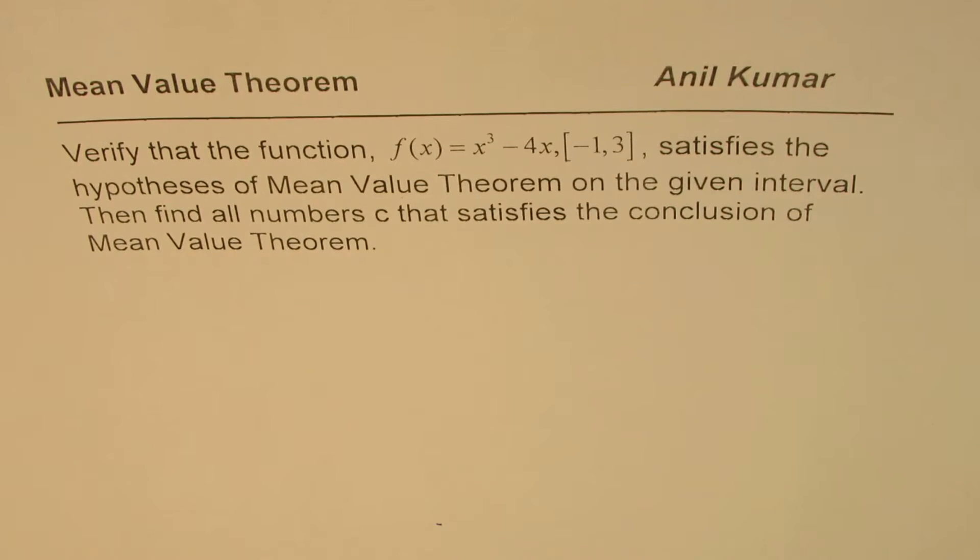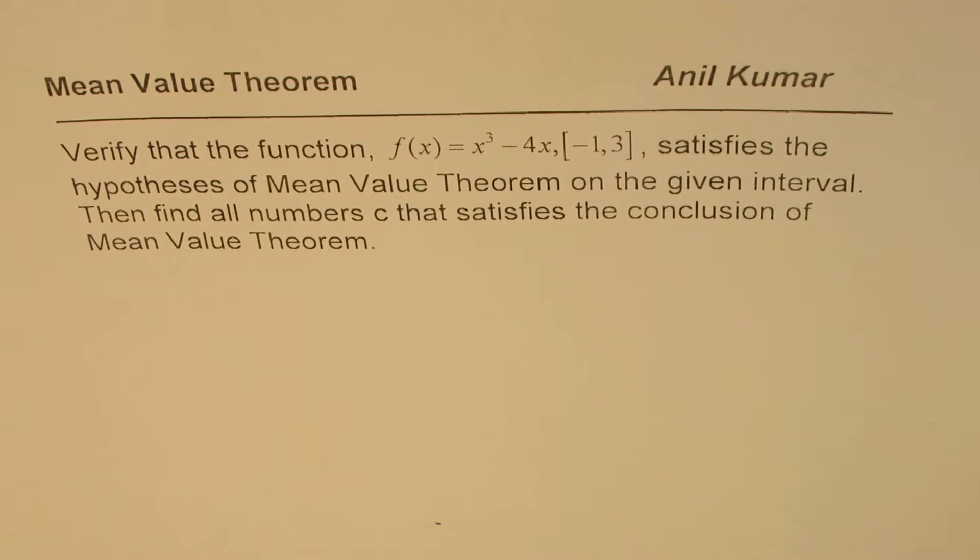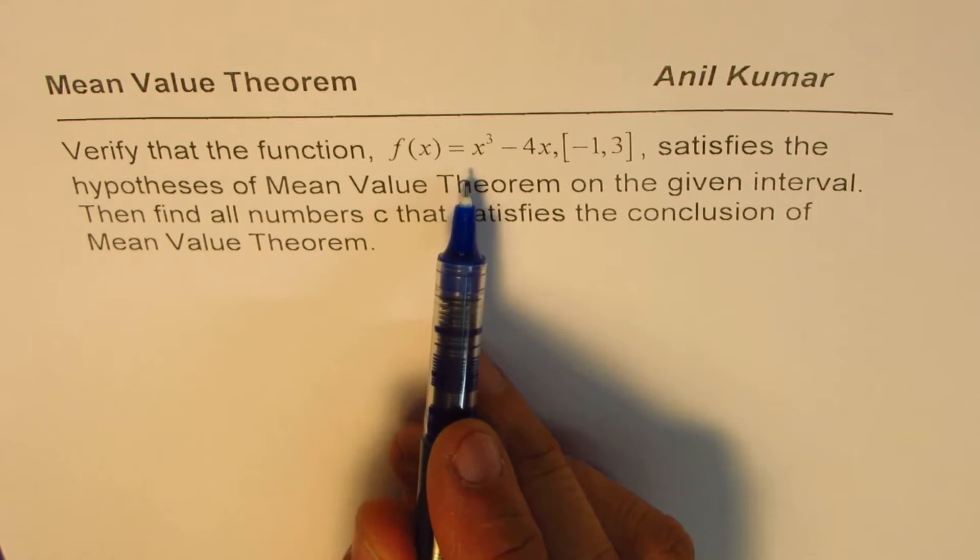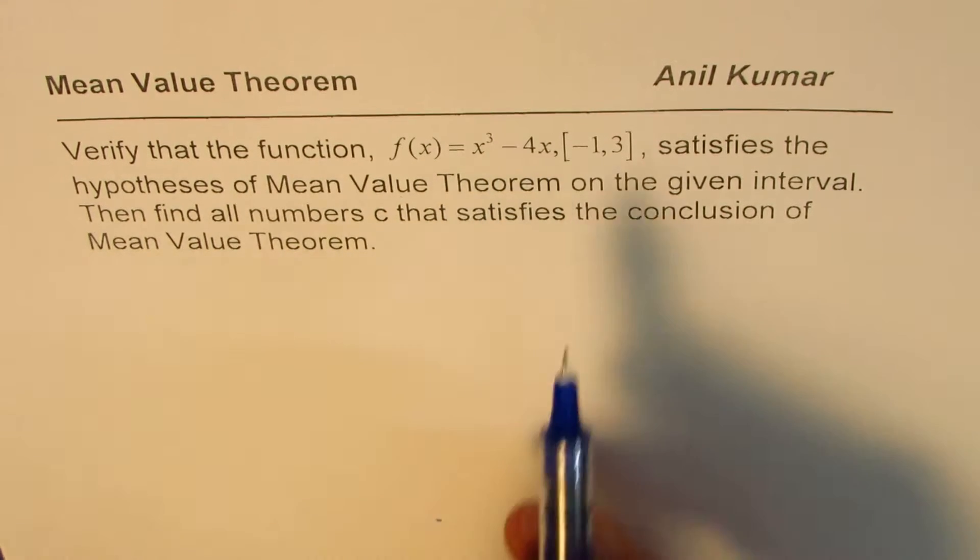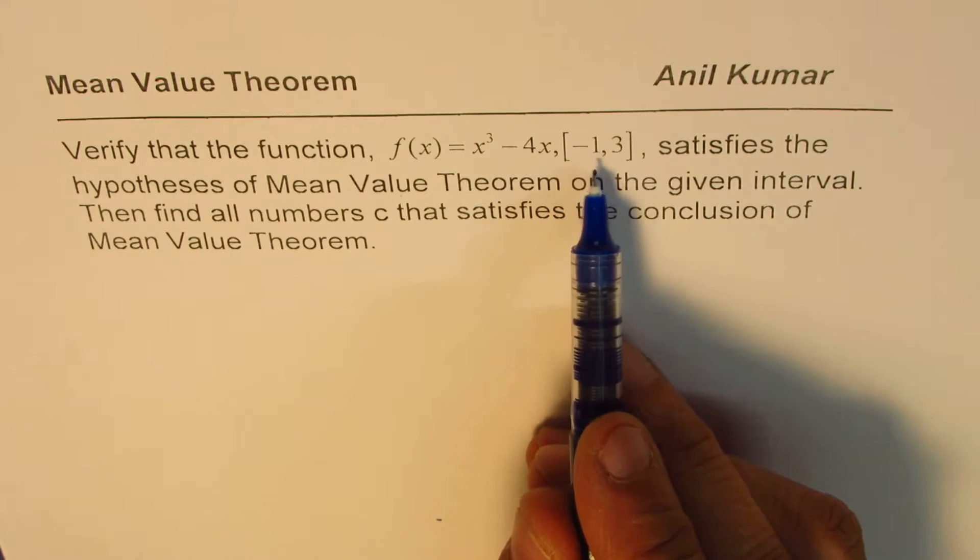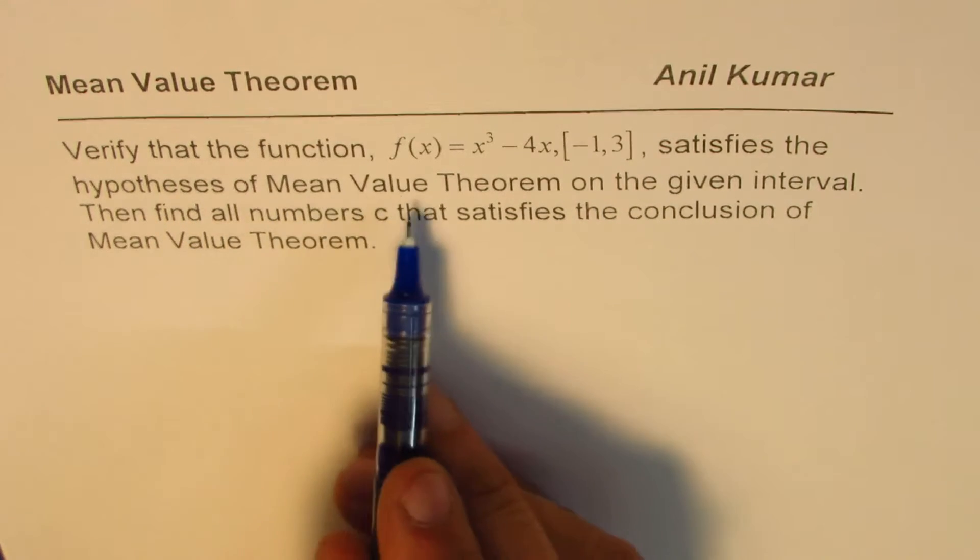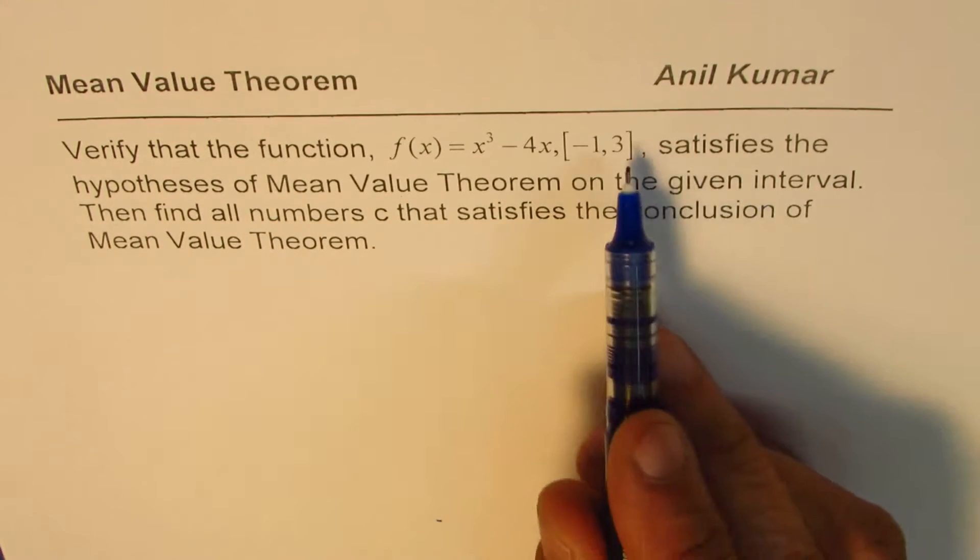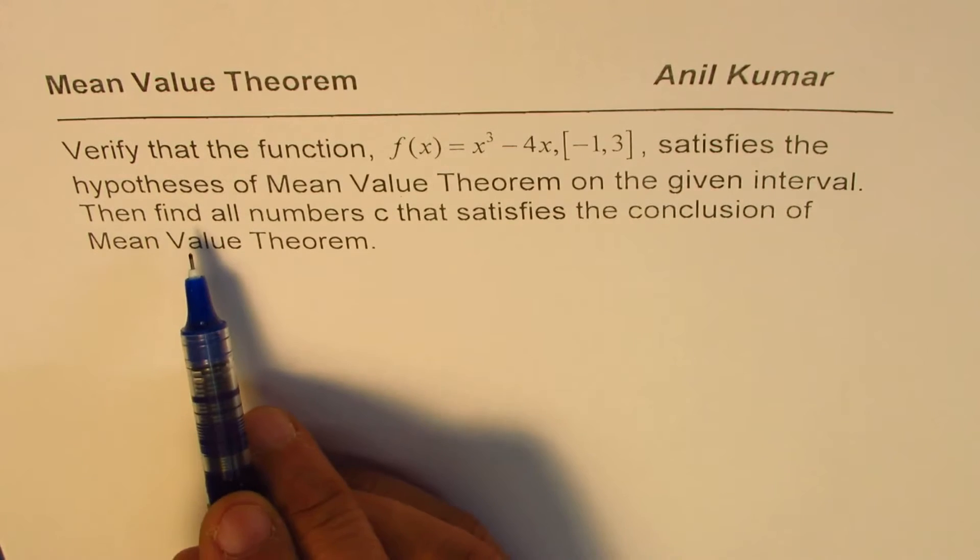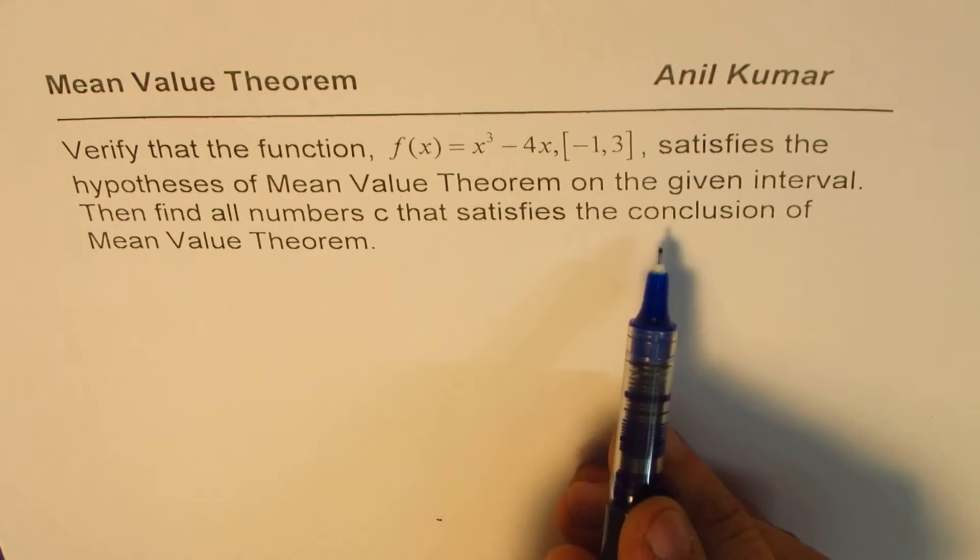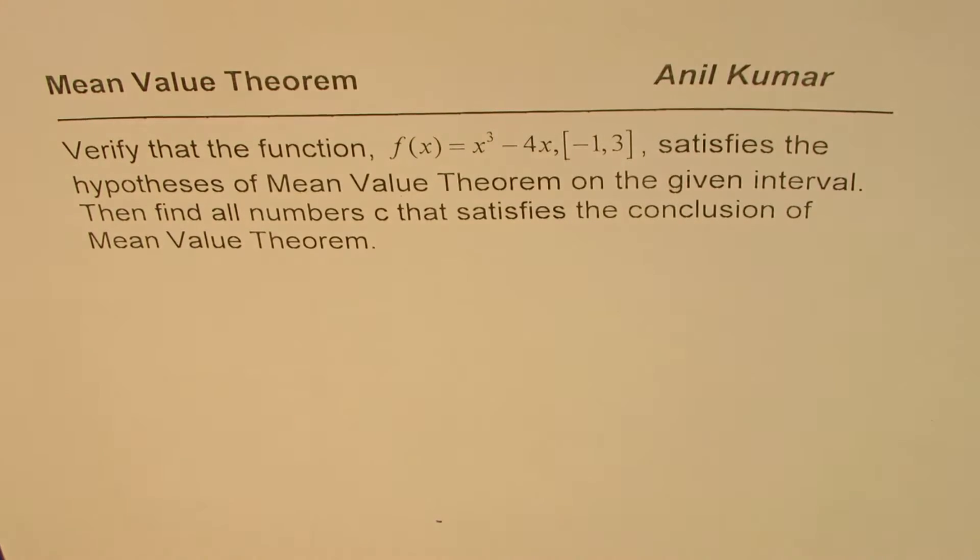I'm Anil Kumar, and here is an example to illustrate mean value theorem. The question is, verify that the function f of x equals x cubed minus 4x in the closed interval minus 1 to 3 satisfies the hypothesis of mean value theorem on the given interval. Then find all numbers c that satisfies the conclusion of the mean value theorem.